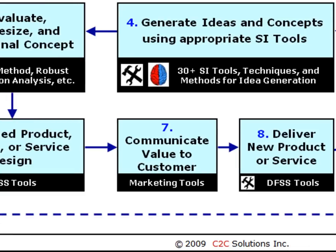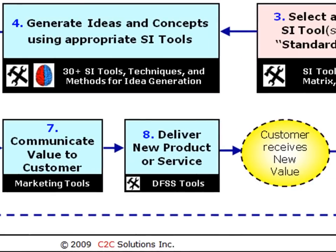Step 7: communicate value to the customer. Any great product will fail if value isn't effectively communicated — which means understood by the customer in advance. Perceived value starts before they buy the product or service, and solidifies through their experiences after the purchase. Step 8: deliver the new product or service. The design of the delivery and distribution of the product is the final step, and can be addressed with many of the typical DFSS tools as well.